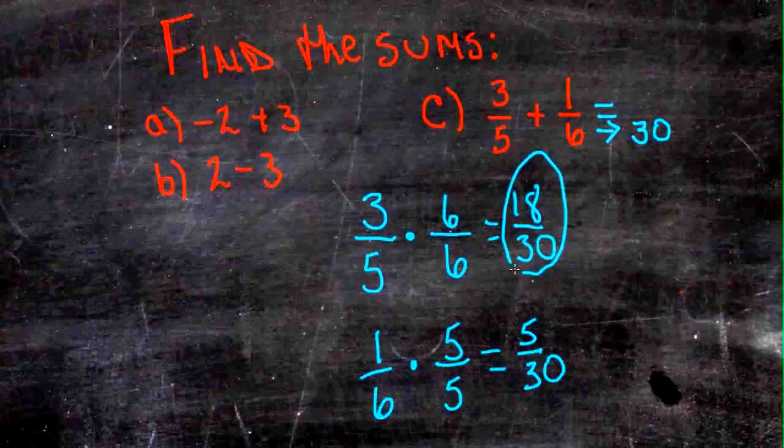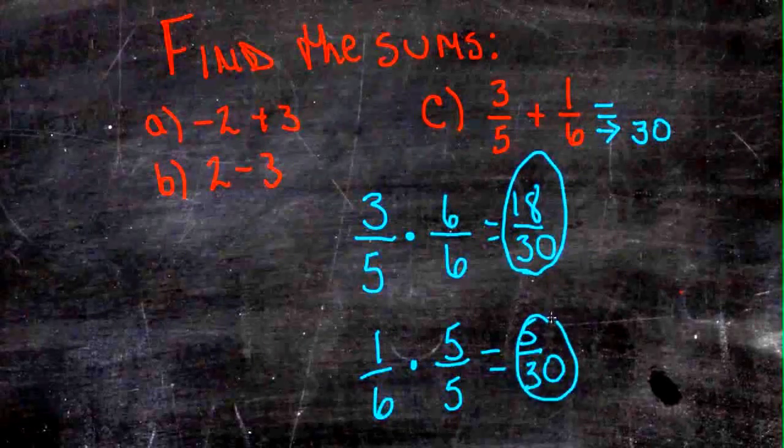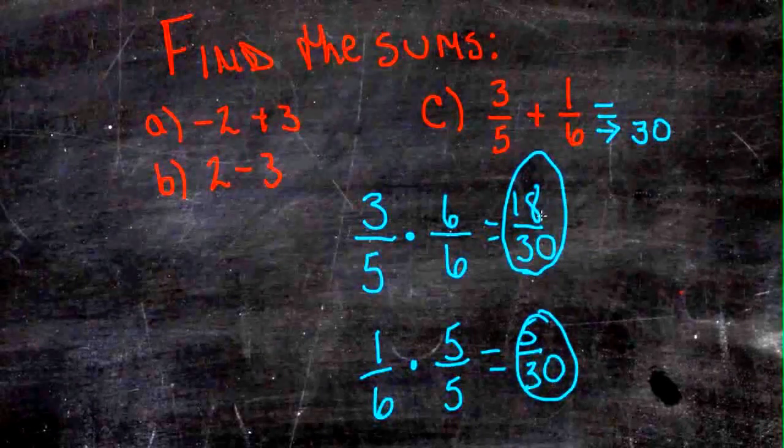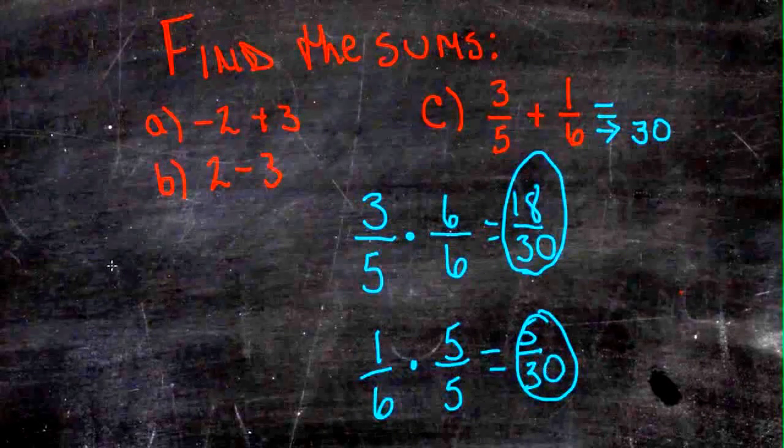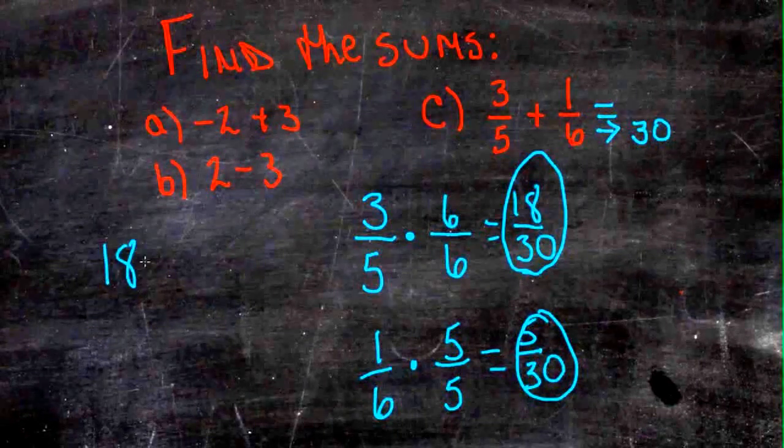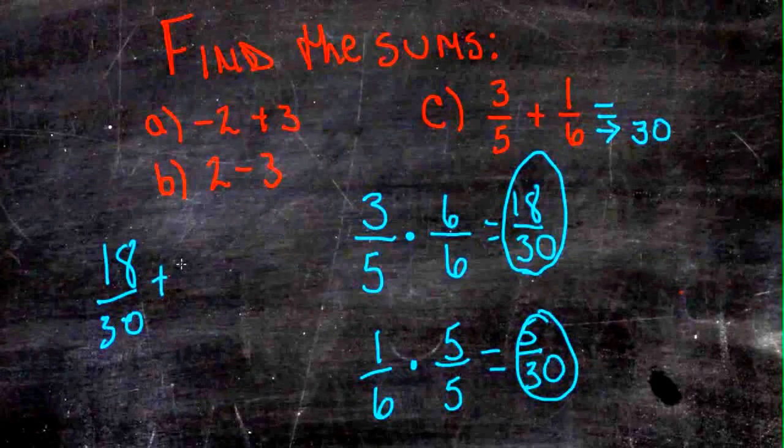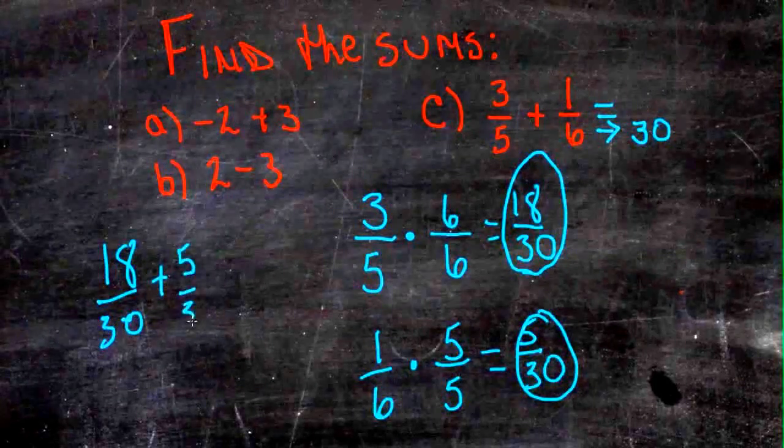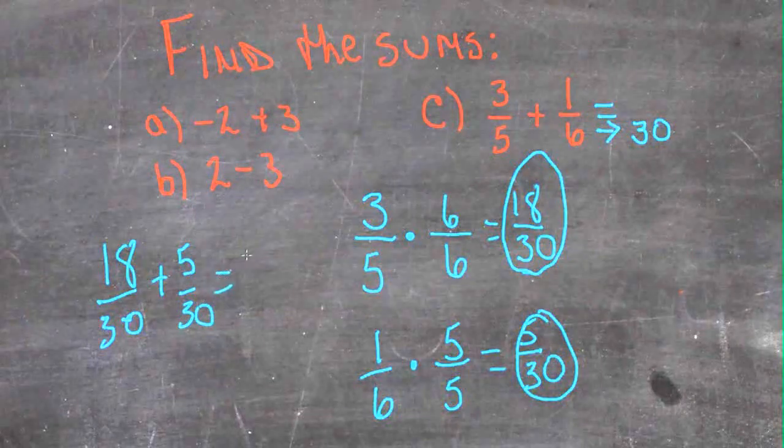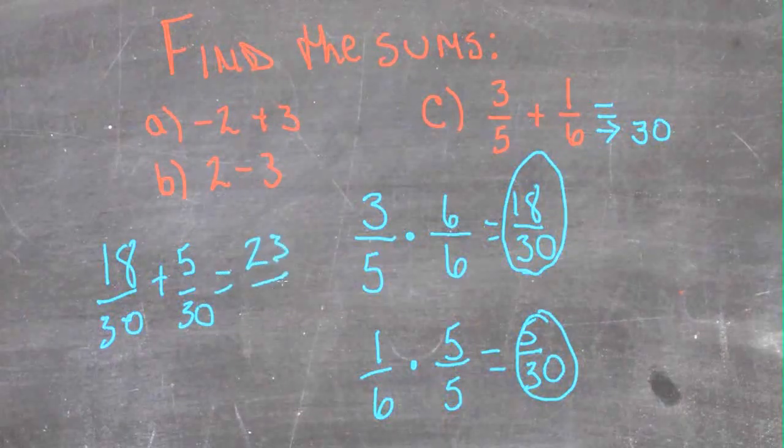Now both of our fractions are in groups of 30, and the sum is much easier. 18 thirtieths plus 5 thirtieths is 23 thirtieths.